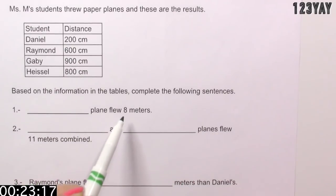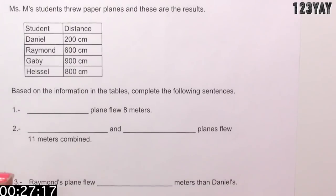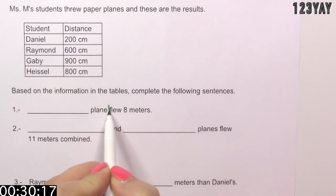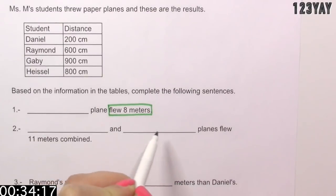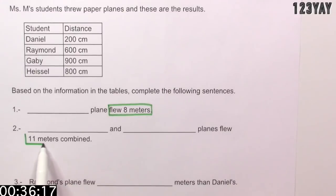Blank plane flew 8 meters. Okay, what are the keywords here? We need to find a plane that flew 8 meters. Blank and blank planes flew 11 meters combined.